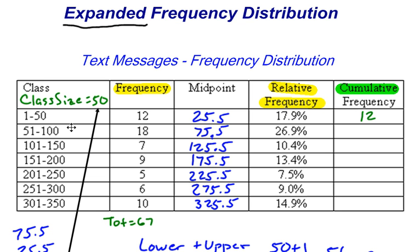So 12 is the cumulative frequency for our first class. But after we go to our second class, we add 18, which gives us 30. So 12 plus 18 gives us 30. And then 12 plus 18 plus 7 is going to give us 37. We just add the next frequency to fill out the cumulative frequency part of our expanded frequency distribution.